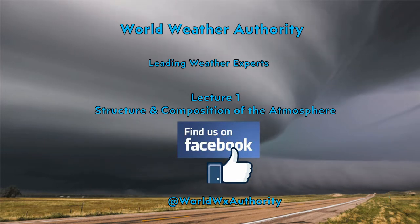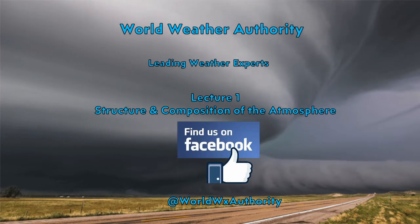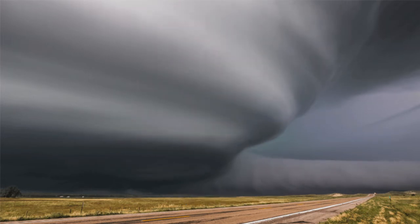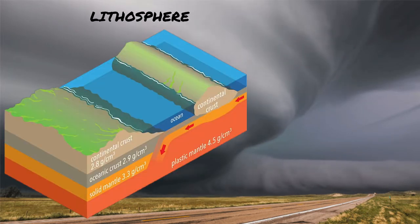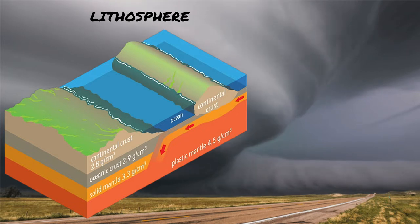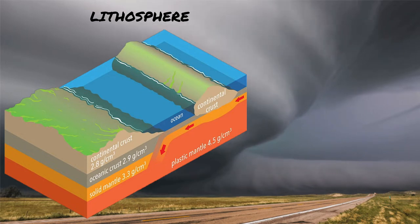So let's start. Lecture one is on the structure and composition of the atmosphere. The Earth's system consists of four different spheres — some say five, but in this lecture we're going to focus on four of them.